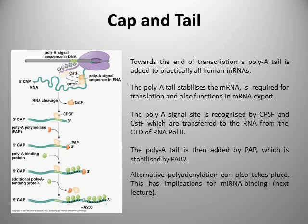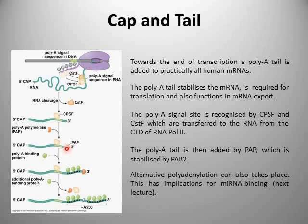What happens then is that the cleavage stimulation factor leads to the cleavage of the mRNA just after this poly-A signal, so the remaining mRNA following the poly-A signal is lost. Once it's done that, the CSTF factor dissociates from the mRNA, leaving just the CPSF factor bound to the poly-A signal, at which point a third protein — poly-A polymerase — is recruited. Poly-A polymerase, in association with stability factors such as PAB2, then goes about polyadenylating the actual mRNA molecule, adding many adenine residues. These adenine residues are then rapidly bound by PAB2, which further stabilises the tail region of the mRNA.